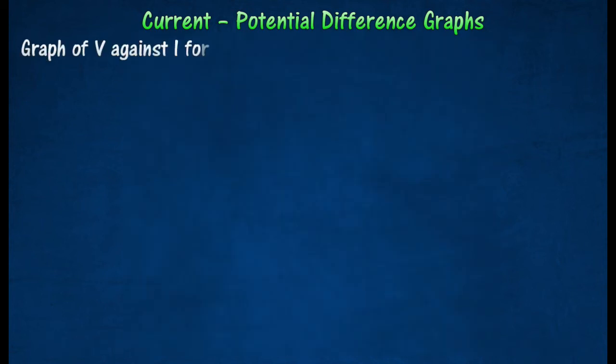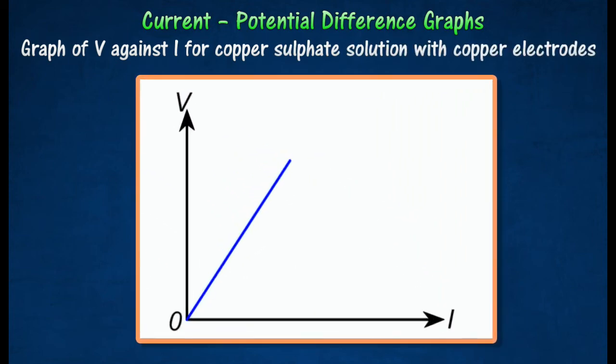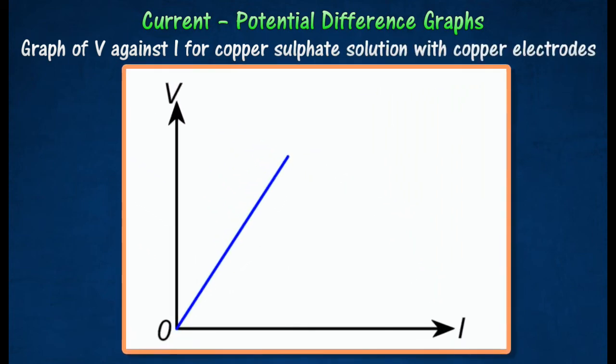Conductors that obey Ohm's Law are called Ohmic Conductors. Examples of Ohmic Conductors are metallic conductors kept at constant temperature and copper sulfate solution with copper electrodes.